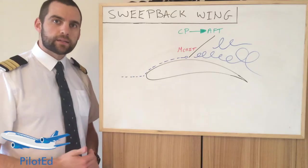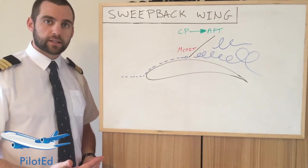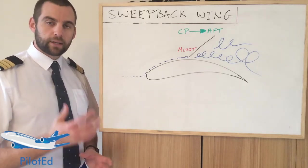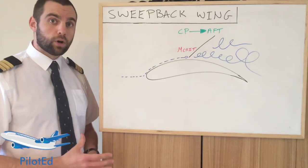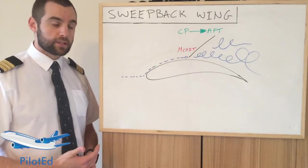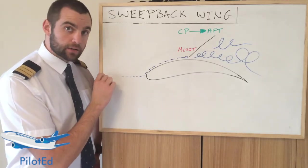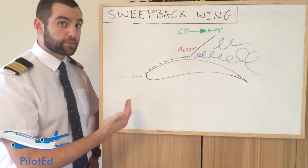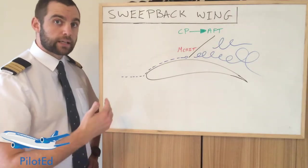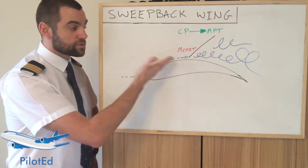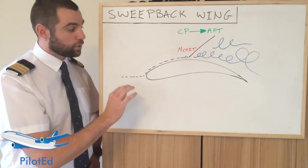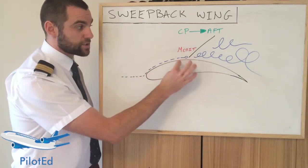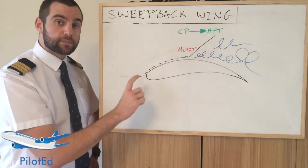The need for a swept back wing came years ago when aircraft started becoming faster and started encountering problems which initially nobody understood. The problem is the air particles moving over the top part of the wing will accelerate. Now depending how fast the aircraft is already traveling, if it's traveling close to the speed of sound, that extra acceleration can cause the airflow to reach the speed of sound at a certain point — generally the thickest part of the wing.